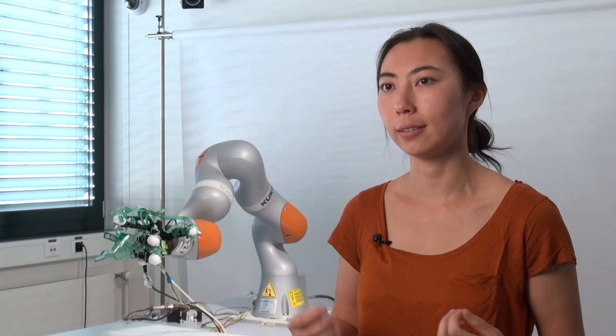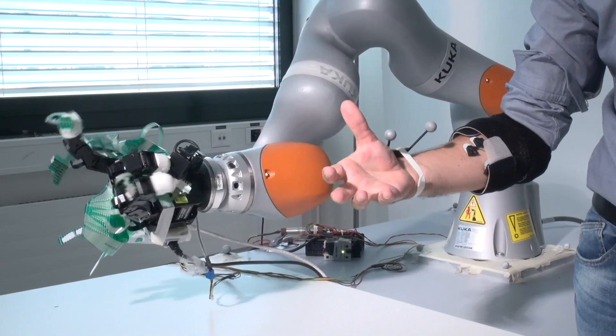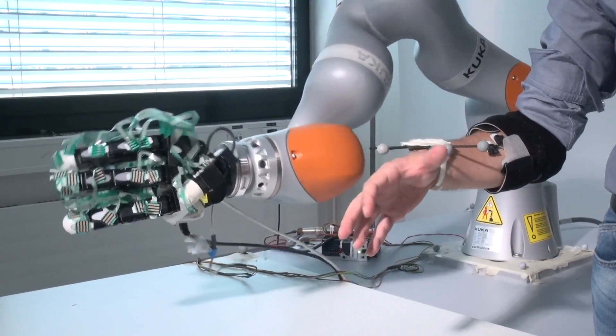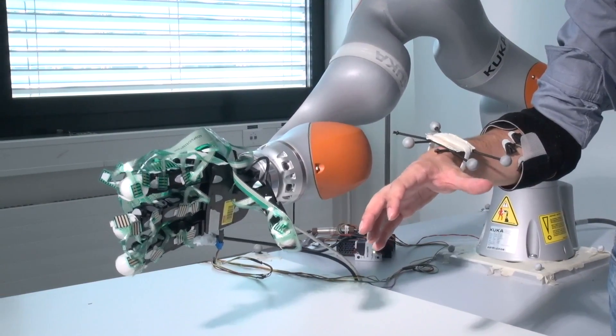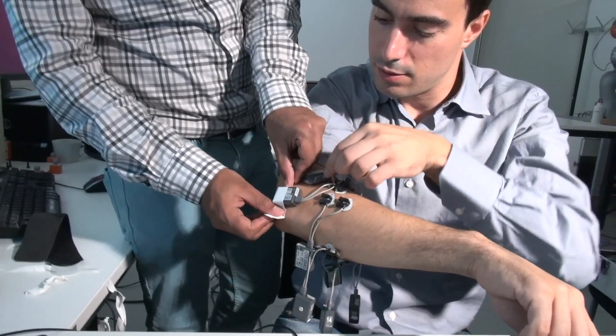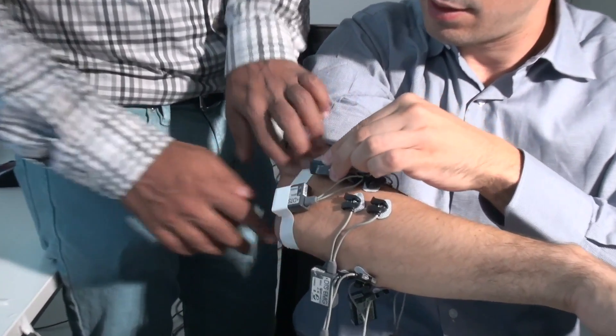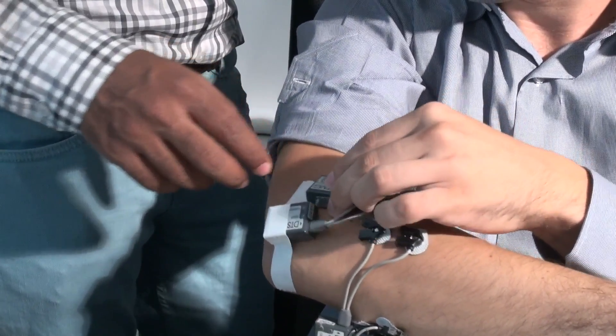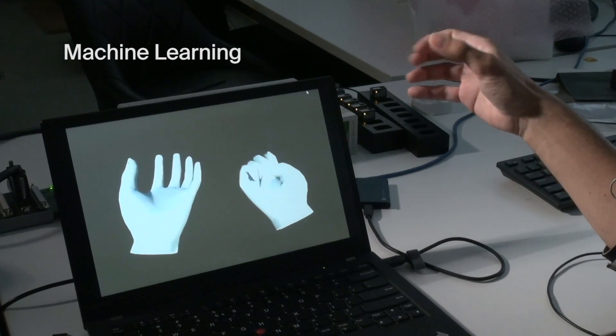For an amputee, it's actually very hard to contract their muscles many different ways to control all of the ways that our fingers move. So what we do is we put these sensors on their remaining stump and then record them and try to interpret what the movement signals are.